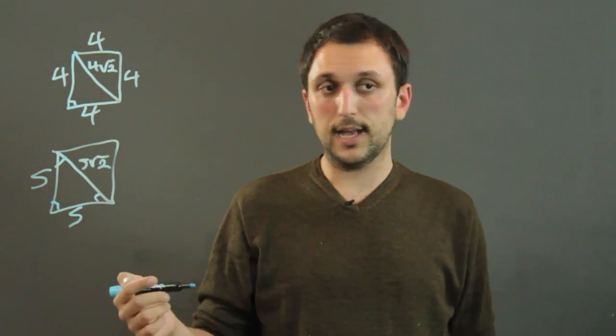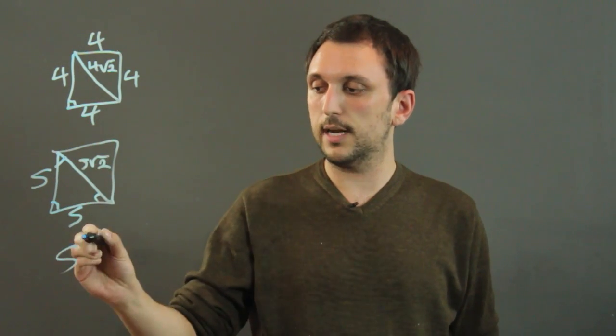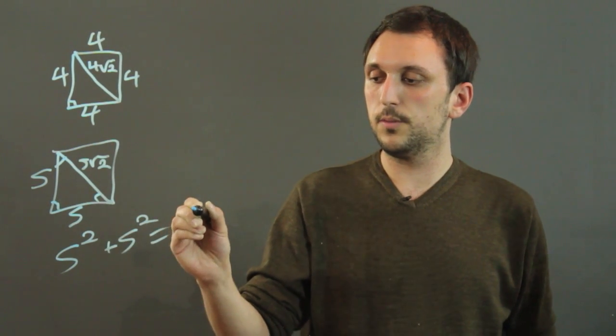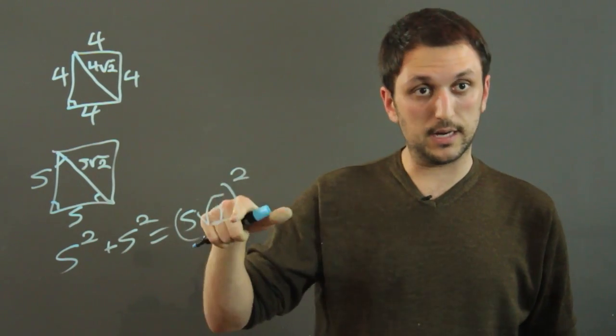And we know that the side ratio is side to side to side root 2, because side squared plus side squared equals side root 2 squared, using the Pythagorean theorem.